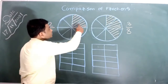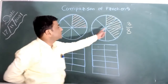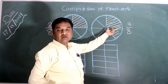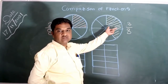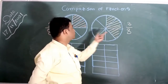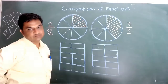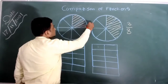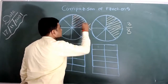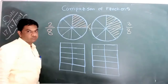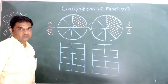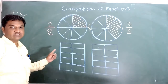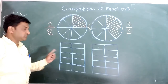Here we have shaded 2 parts in the first circle and 3 parts in the second circle, so this circle is shaded more as compared to the first. So clearly we can see that 3 by 8 is greater than 2 by 8. The comparison of like fractions is easy.